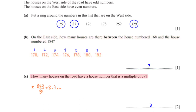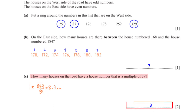How many houses on the road have a house number that is a multiple of 39? We divide the total number of houses, 349, by 39, which gives 8.9. This means there are 8 houses with a house number that is a multiple of 39.